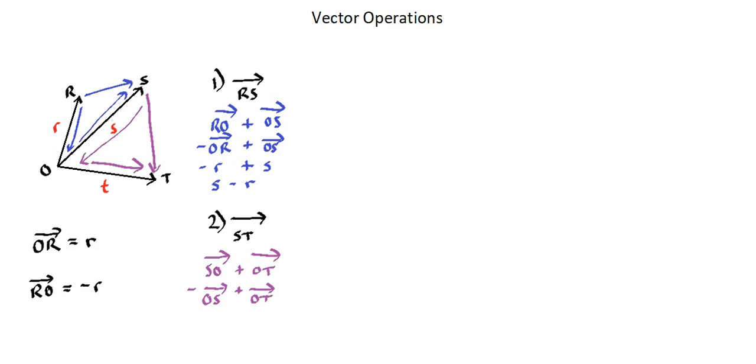And now looking at terms of small R, small S, small T. Negative OS is the same as minus S, because small letter S is equivalent to vector OS. And OT is equivalent to small letter T. Minus S plus T. Put our positive term in front. T minus S is vector ST in terms of the vectors small letter T and small letter S. Let's now look at another example.